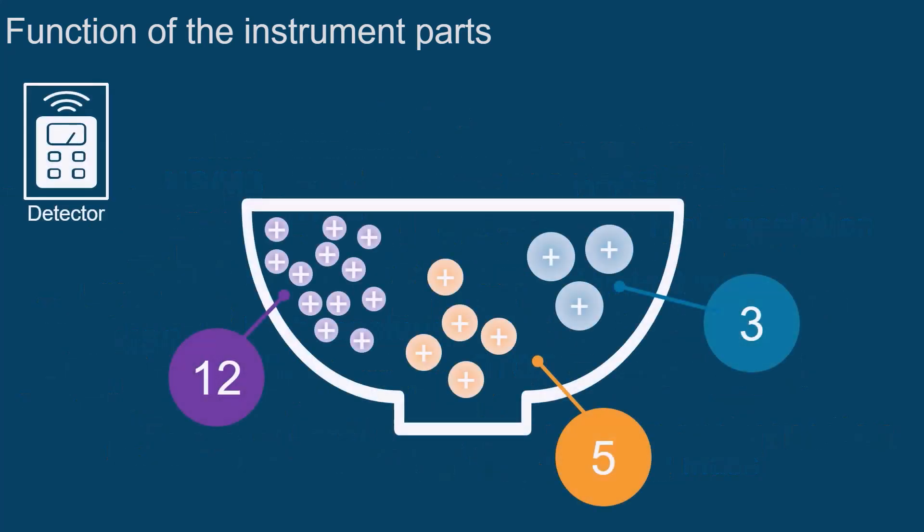The detector measures how many ions with a given M over Z value strike its surface at a given point in time.